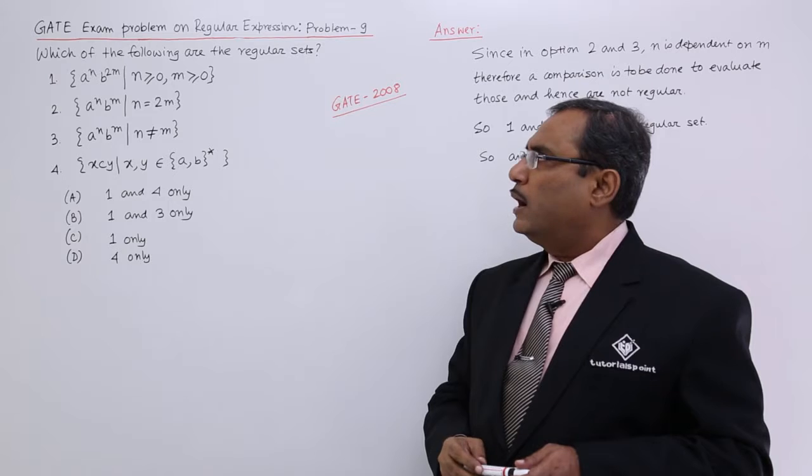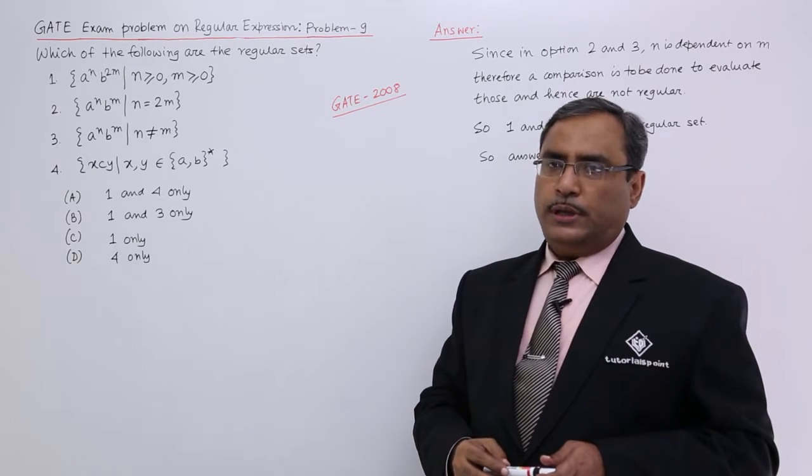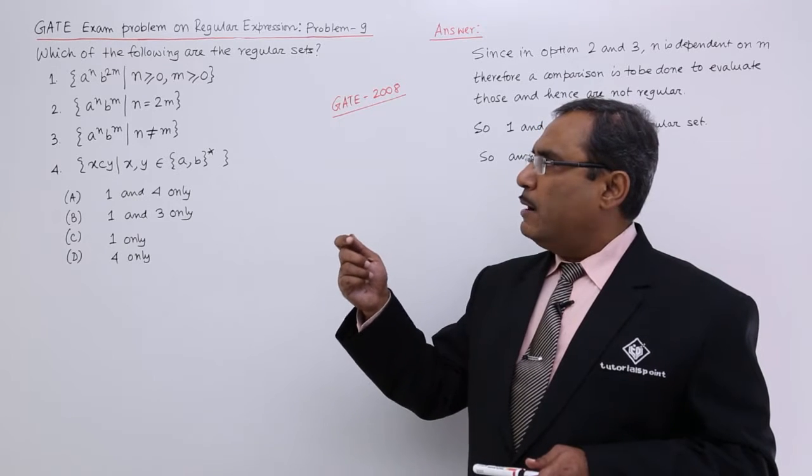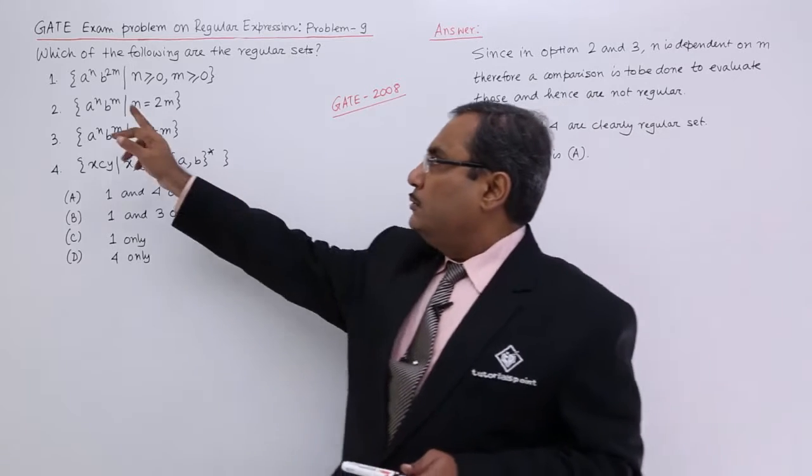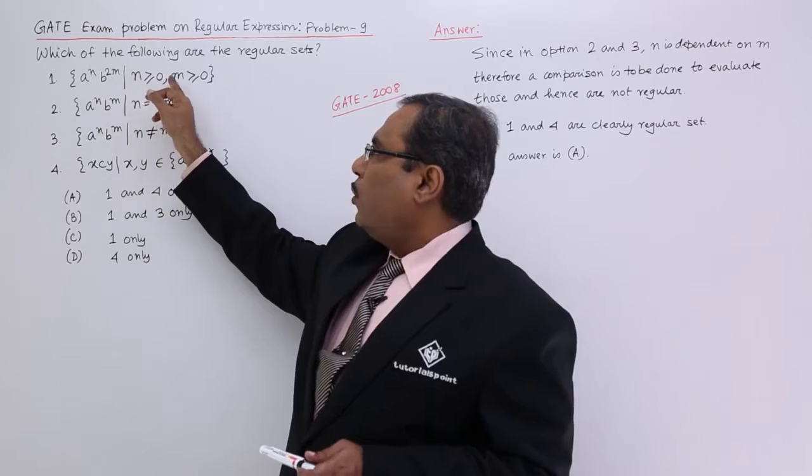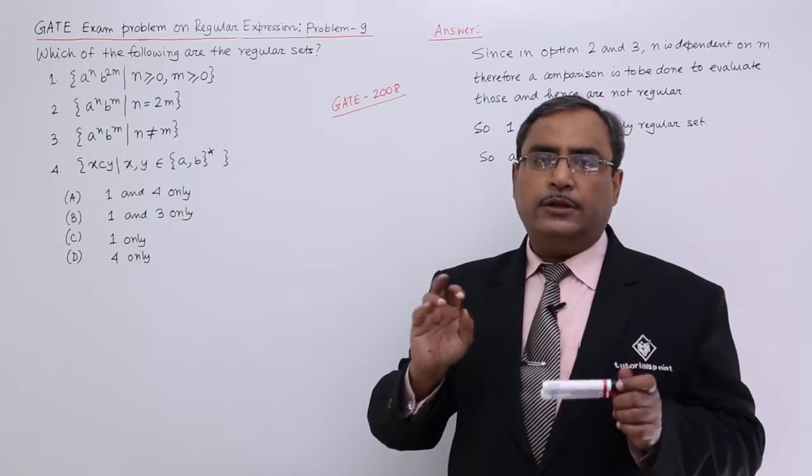If you look at option number 1, n number of a and 2m number of b will be produced. Now there is no correlation between n and m. Only it has been mentioned that n and m both can be greater than equal to 0.